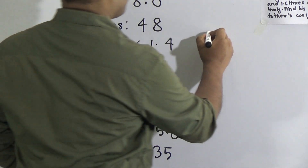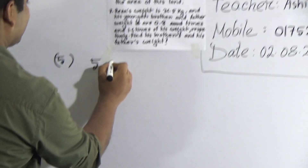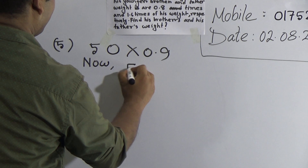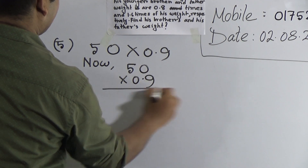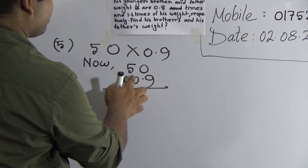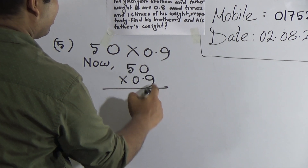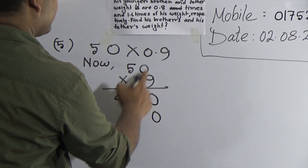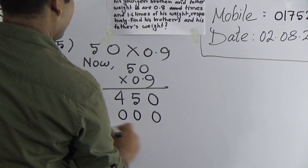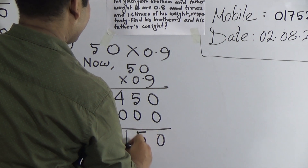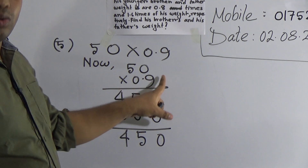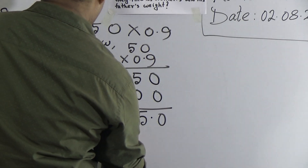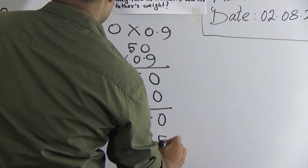Next, we shall solve question number 5, which is 50 multiplied by 0.9. So 50 multiplied by 0.9 — we do multiplication: 50 by 9 and also 50 by 0. 9 × 0 = 0, 9 × 5 = 45. Once place done, here we write 0. 0 × 0 = 0 and 0 × 5 = 0. We do addition: 0, 5, 4. After point, how many digits? 1 digit. So here we place the point. So 45 is the answer of this question. Number 1 is done.